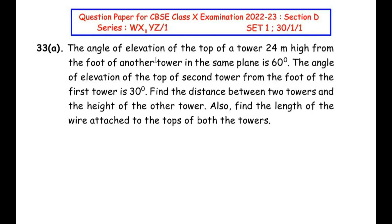The angle of elevation of the top of a tower 24 meters high from the foot of another tower in the same plane is 60 degrees. The angle of elevation of the top of the 2nd tower from the foot of the first tower is 30 degrees. Find the distance between the two towers and the height of the other tower. Also find the length of the wire attached to the tops of both the towers.